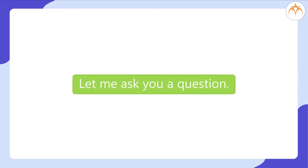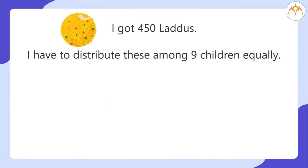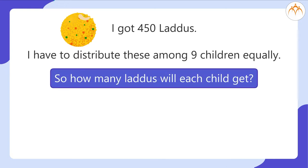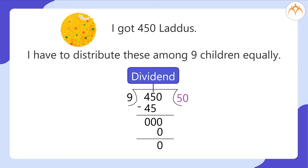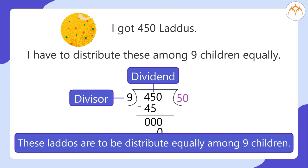Students, let me ask you a question. I got 450 laddus and I have to distribute these among 9 children equally. So how many laddus will each child get? 450 is the dividend, 9 is the divisor. So 450 divided by 9 is equal to 50. What is the dividend here? 450 — these many laddus are to be distributed. And which one is the divisor? 9 — these laddus are to be distributed equally among 9 children.